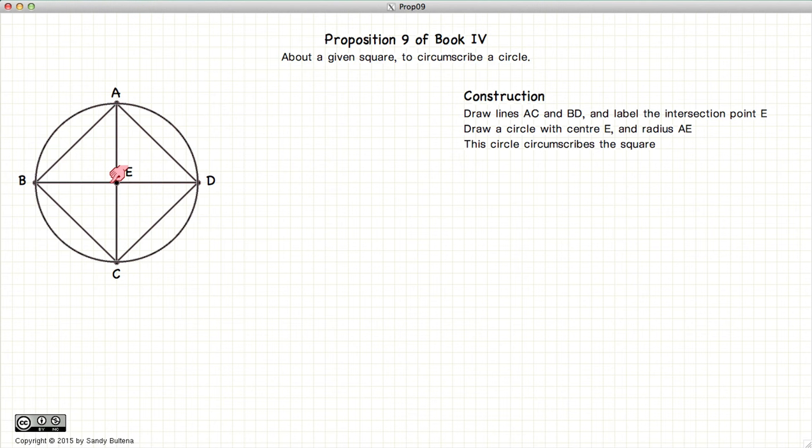Now taking E as the center of the circle and AE as the radius we draw a circle and this circle will pass through the points B, C and D.